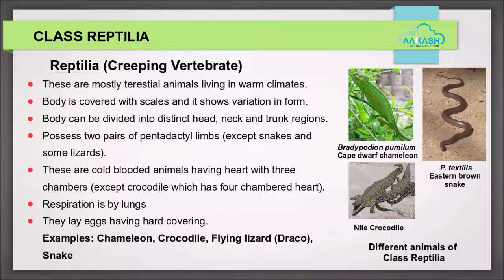Class Reptilia, that is creeping vertebrates: these are mostly terrestrial animals living in warm climates. Their body is covered with scales and shows variation in form. It can be divided into distinct head, neck, and trunk regions. These animals possess two pairs of pentadactyl limbs, except snakes and some lizards. They are cold-blooded animals with a three-chambered heart, except crocodile which has a four-chambered heart. Respiration is by lungs. They lay eggs with a hard covering. Examples: Chameleon, Crocodile, Flying Lizard (Draco), and Snakes.